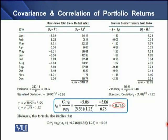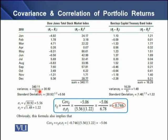We can apply this to the year 2010 data we have already seen, with total stock market index and bond index on a monthly basis. We calculate the squared deviations, divide the sum by N minus one since we are using the sample mean, and determine the standard deviation for the stock market index, which is 5.56%, and the standard deviation of the bond index, which is 1.22%.